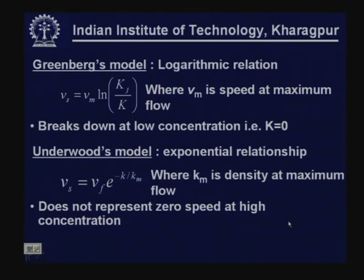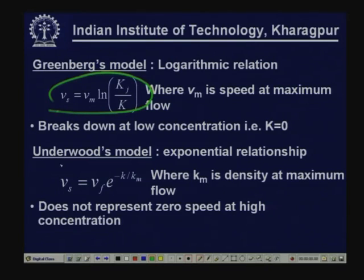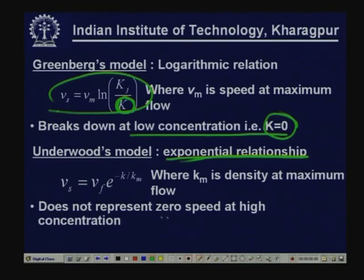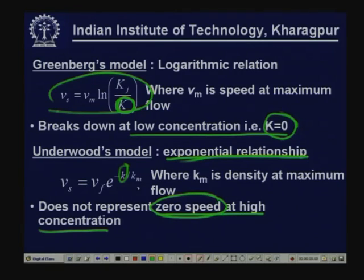Other speed-density models include Greenberg's logarithmic model and Underwood's exponential model. Greenberg's model breaks down at low concentration (K = 0). Underwood's exponential model does not represent zero speed at high concentration as the Greenshields linear model does. Many other models have been developed by researchers over time.